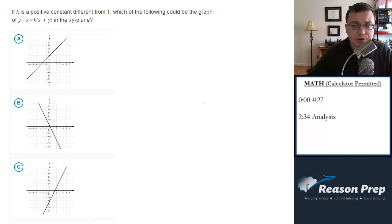If k is a positive constant different from 1, which of the following could be the graph of that in the xy plane? Two ways to do this. One is to do it abstractly. I'll show you that second. The second is to plug in a number.